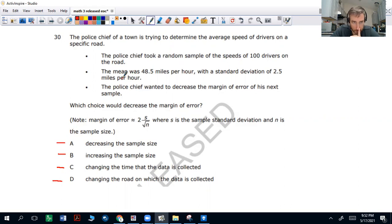Okay, so I want you to think about this. This is your formula. Is there anywhere in that formula that says time or road on it? All we have is S for standard deviation and N for the sample size. That's it.